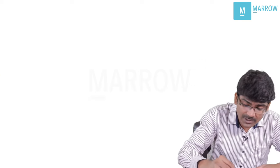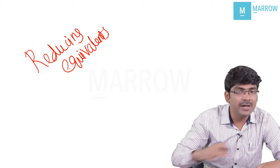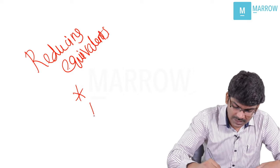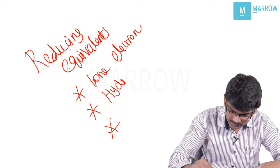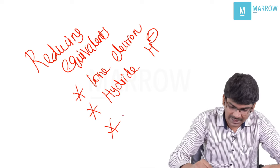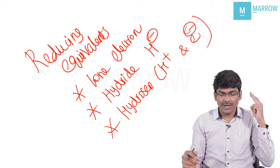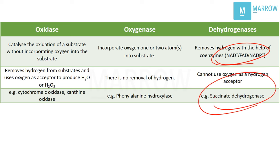These coenzymes accept what is known as reducing equivalents. A reducing equivalent is either of these three: it can be a lone electron, a hydride ion (H⁻), or a hydrogen (proton plus electron). Either of these three is known as a reducing equivalent, and they are accepted by NAD⁺, FAD, and NADP⁺. Dehydrogenases cannot use oxygen as the hydrogen acceptor — they can use only these three. An example of a dehydrogenase is succinate dehydrogenase.